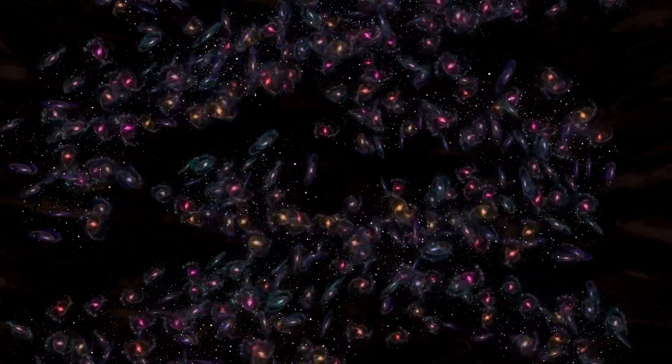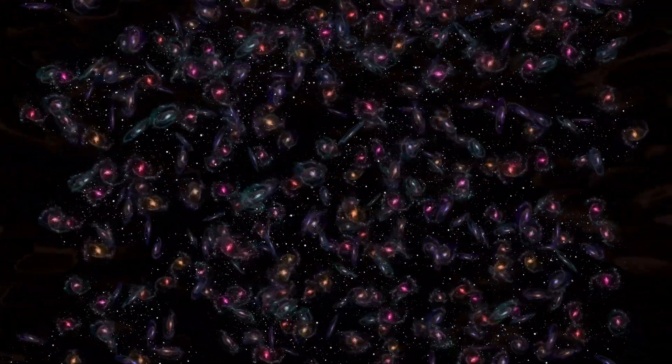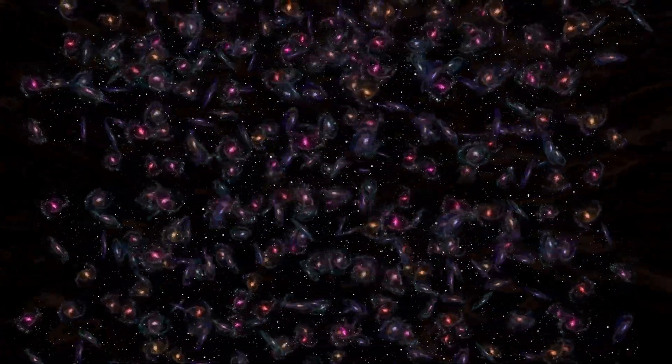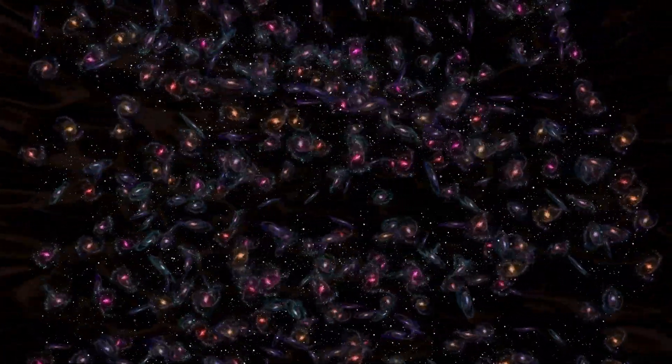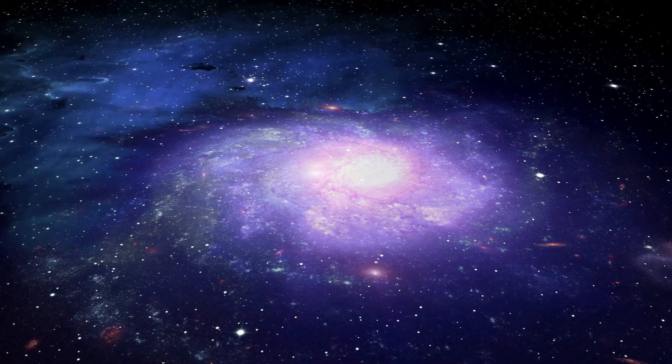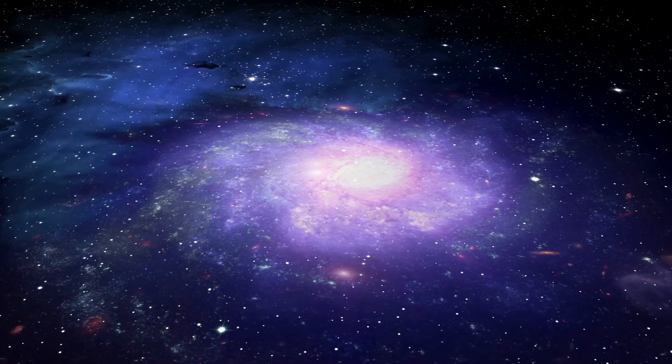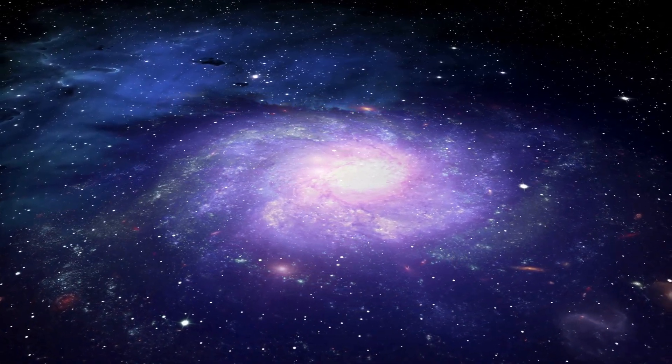Imagine a spinning galaxy. Now, according to the laws of physics, the stars at the edge of the galaxy should be moving slower than those near the center due to the gravitational pull. But they don't. They move at nearly the same speed. This suggests that there's something else, some invisible matter, that's adding to the gravity and keeping those stars in check. And that, my friends, is what we call dark matter.